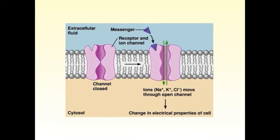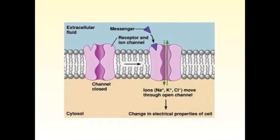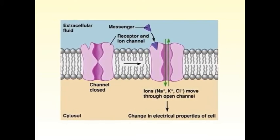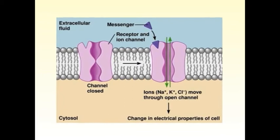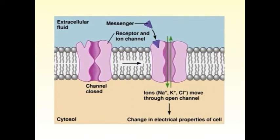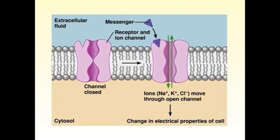As shown in this diagram, the function of ion channels is to allow specific inorganic ions — mainly sodium, potassium, calcium, or chloride ions — to diffuse rapidly down their electrochemical gradients across a lipid bilayer. The ability to control ion fluxes in this way is essential for many cell functions.